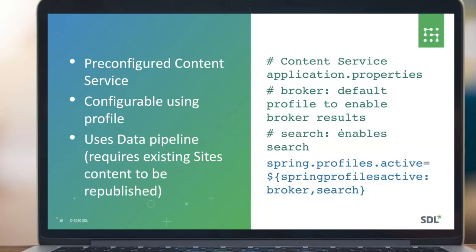So what do you get out of the box? The content service is now pre-configured to support search. The Sites search extension, if configured on your content service, would have search pre-configured, and you'll see that in application properties — one of the standard configuration points we use in our services. It's pre-configured for two profiles here, but if you wish to disable search for any reason — you don't want the overhead of the search libraries being loaded — you can remove search from this list of profiles, and it just behaves as it did in Sites 9.1 as a content service without search facilities.